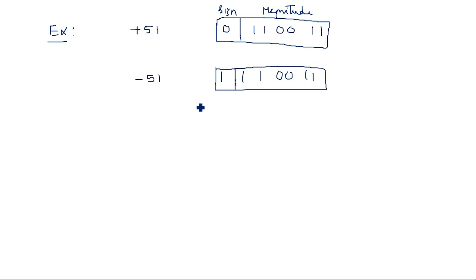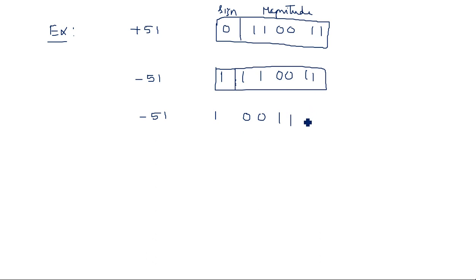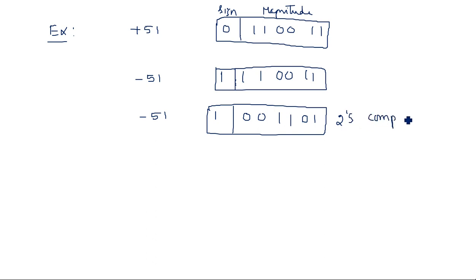In 2's complement, minus 51 is represented by converting the magnitude: changing 1's to 0's and 0's to 1's, then adding 1. So 110011 becomes 001100 in 1's complement, and adding 1 gives 001101 — this is the 2's complement form. So minus 51 in 2's complement is represented as 1 followed by 001101, where 1 is the sign bit and 001101 is the magnitude.